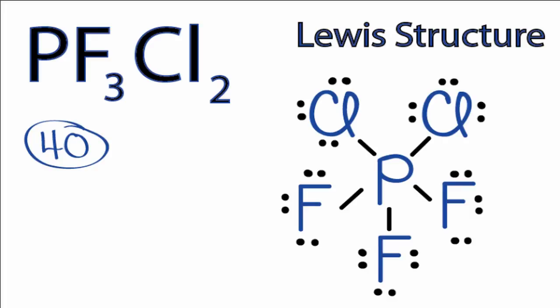If you check the formal charges for the atoms in this Lewis structure, you'll see that all of the atoms have a formal charge of 0. So this is the Lewis structure for PF3Cl2. This is Dr. B. Thanks for watching.